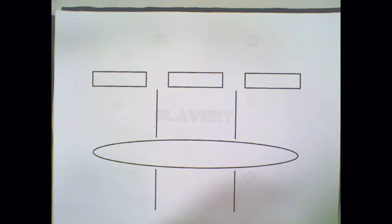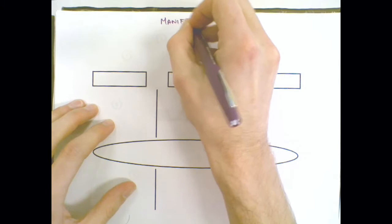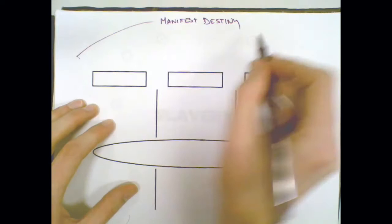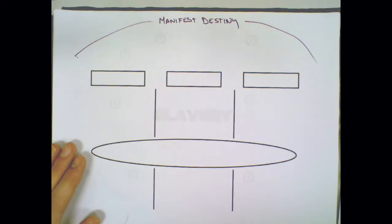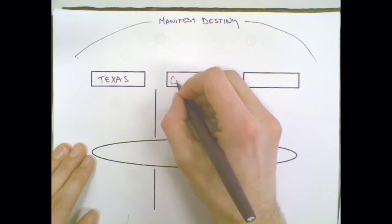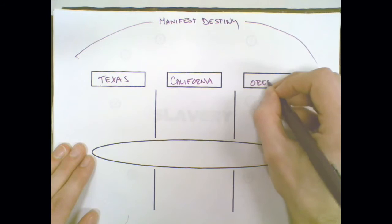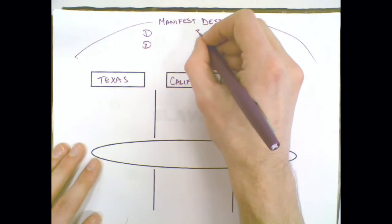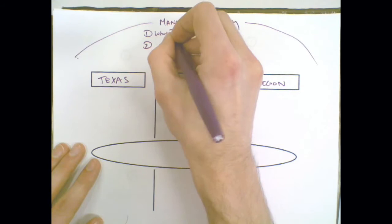So first of all, we are going to begin at the beginning of Unit 9 dealing with a little thing that we like to call Manifest Destiny. Manifest Destiny is the main focus of pretty much everything that we're going to be talking about. This is a timeline and we're dealing with this timeline in three places: Texas, California, and Oregon.